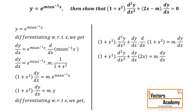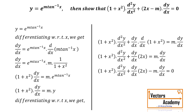Now the derivative of 1 plus x² is 2x; the rest of the terms remain the same. We will take m·dy/dx to the left hand side and then take dy/dx common from the last two terms, and we get the required answer.